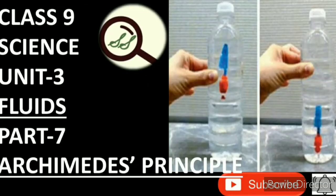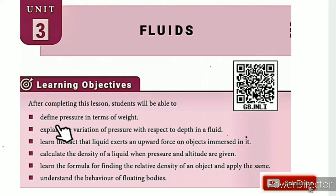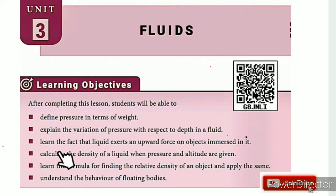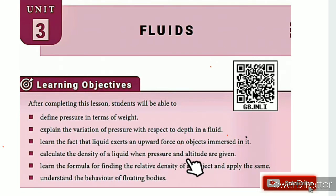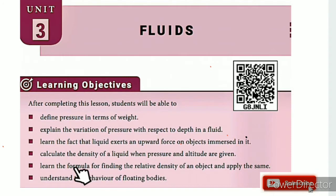From Class 9 Science Unit 3 Fluids Part 7: Archimedes Principle. The learning objectives are: define pressure in terms of weight, explain the variation of pressure with respect to depth in a fluid, learn that liquid exerts an upward force on objects immersed in it, calculate the density of liquid when pressure and altitude are given, learn the formula for finding the relative density of an object and apply it, and understand the behavior of floating bodies.